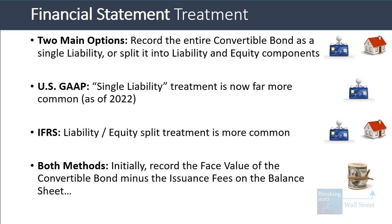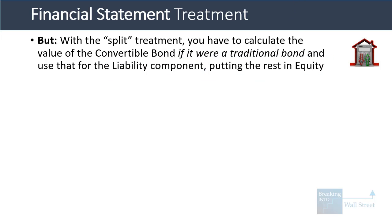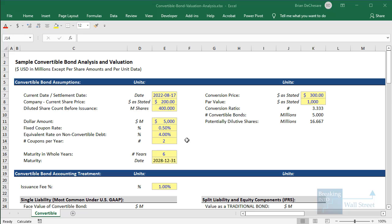Under both methods, you record the face value of the convertible bond minus the issuance fees on the balance sheet. But with the split treatment, you calculate the value of the convertible bond as if it were a traditional bond and use that for the liability component. Then you put the remainder — the face value minus this liability component — into equity. You then amortize the bond discount and include it with cash interest and interest expense on the income statement, and add it back as a non-cash adjustment on the cash flow statement. Let's go into Excel for a quick look.